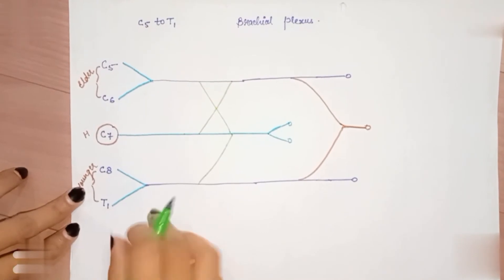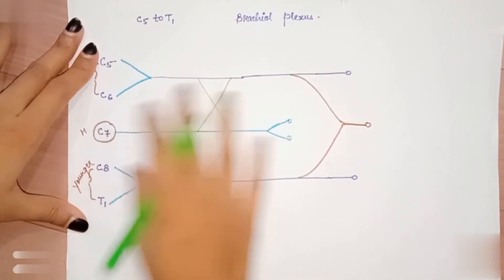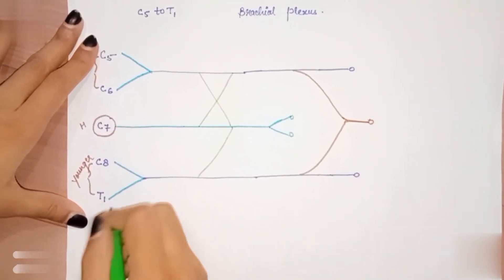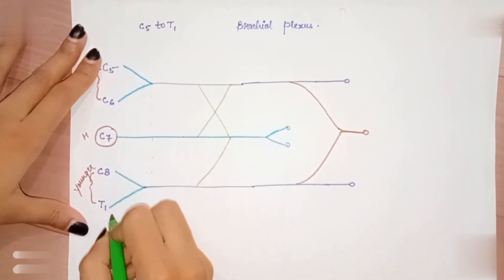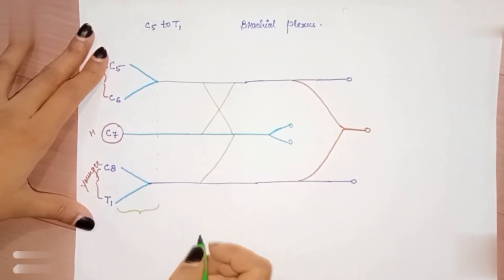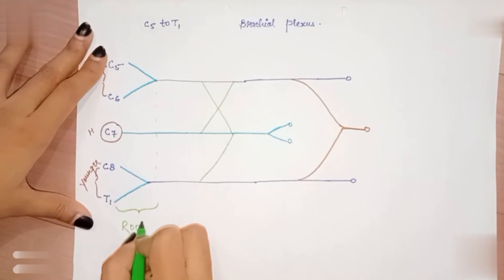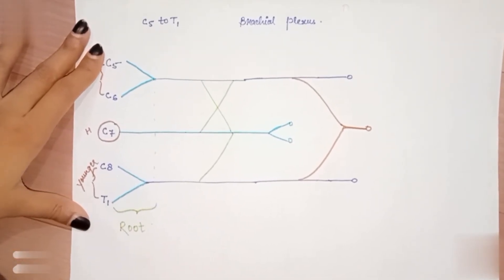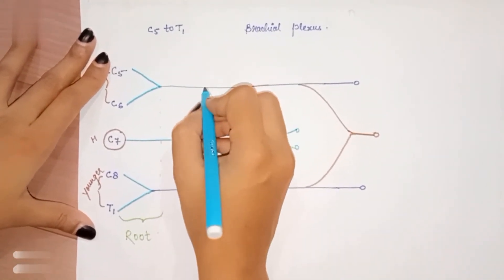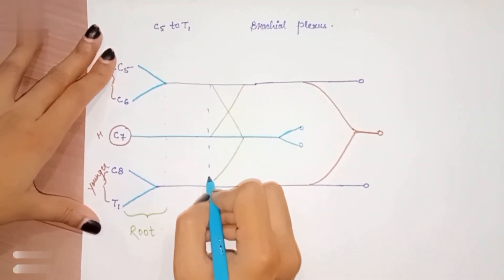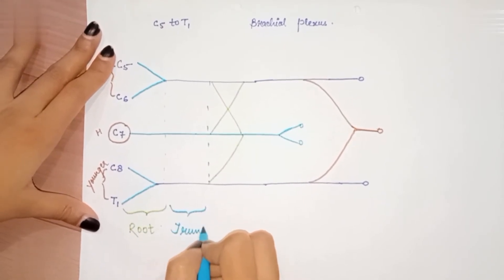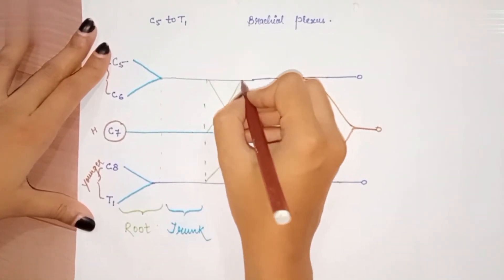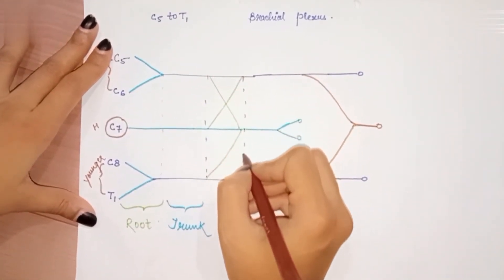This is the complete brachial plexus. Now what about the branches, cords, and other structures? I'm drawing lines to differentiate: this is the root, another line shows the trunk, and where there was a helping hand is the division.